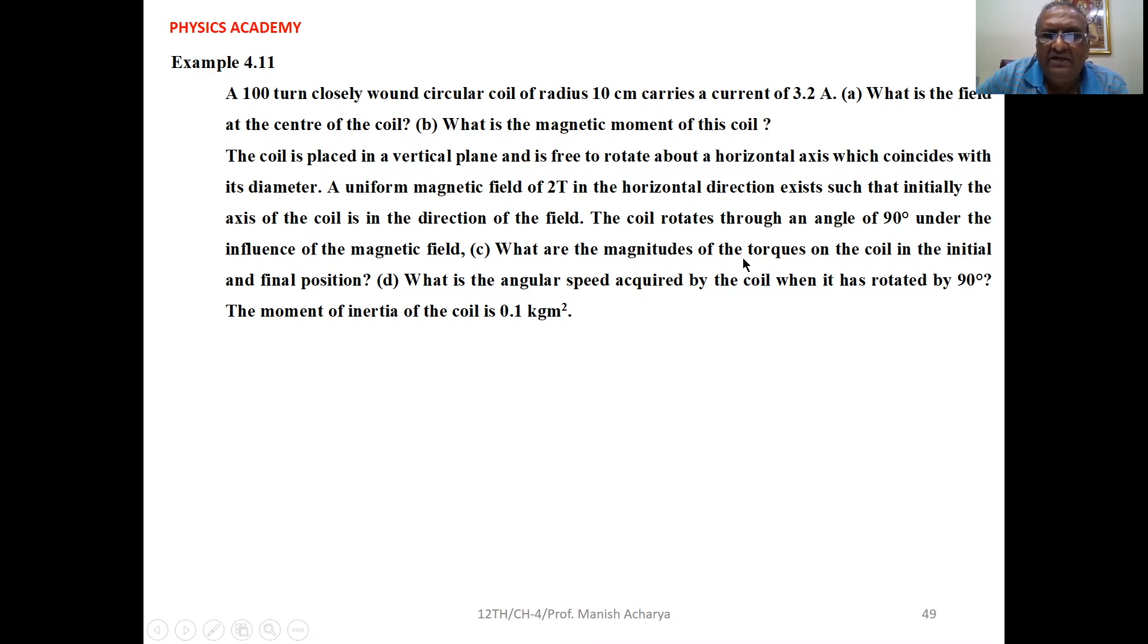The coil rotates through an angle of 90 degrees under the influence of the magnetic field. Part C: What are the magnitudes of the torque on the coil in the initial and final position? Part D: What is the angular speed acquired by the coil when it is rotated by 90 degrees? The moment of inertia of the coil is 0.1 kilogram meter squared.